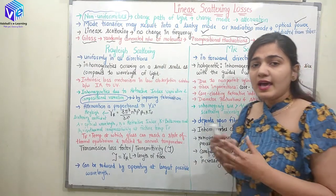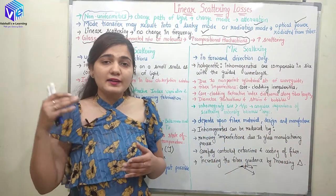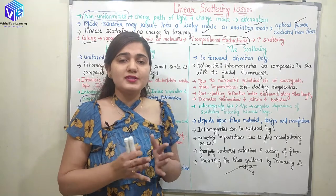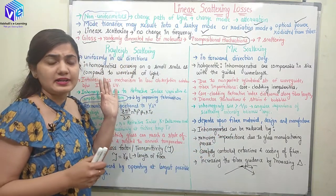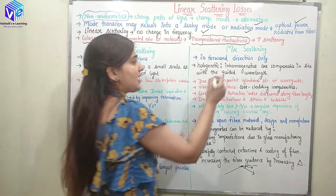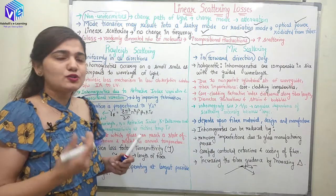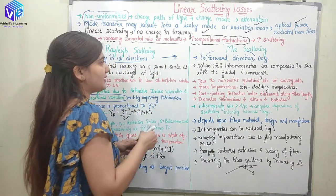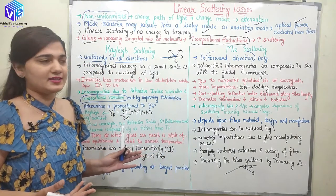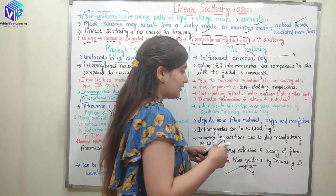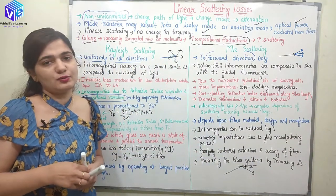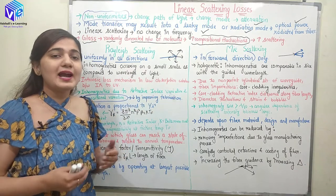In Rayleigh scattering, like the light from the sun scattered in the atmosphere making our sky look blue, scattering happens uniformly in all directions. In Mie scattering, on the other hand, scattering happens in the forward direction only — the light spreads only in the front direction. There is no backward scattering in the case of Mie scattering.